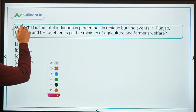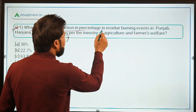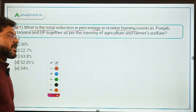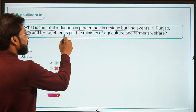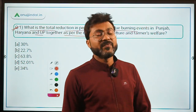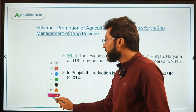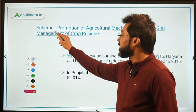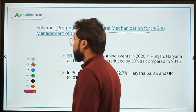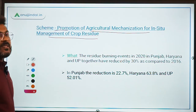The first question asks: what is the total reduction in percentage in residue burning events in Punjab, Haryana, and UP together, as per the Ministry of Agriculture and Farmers Welfare? Questions one and two are based on the scheme known as the Scheme for Promotion of Agricultural Mechanization for In-Situ Management of Crop Residue.